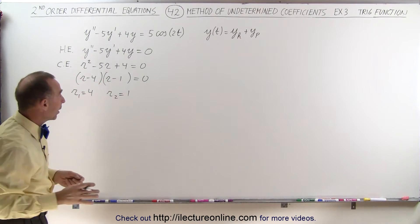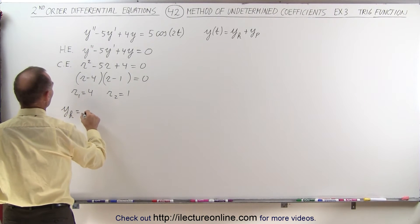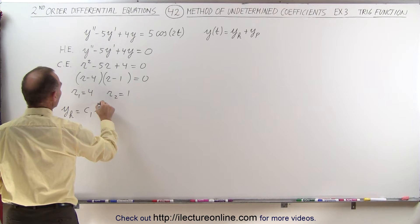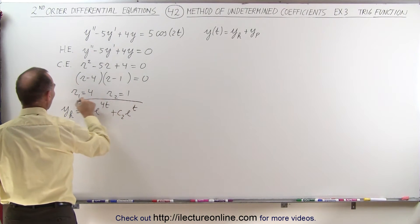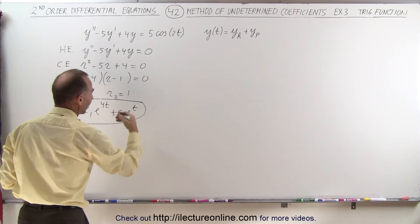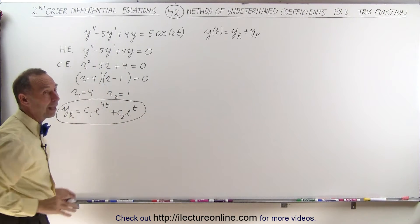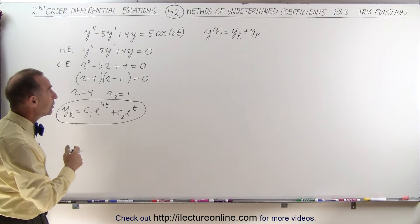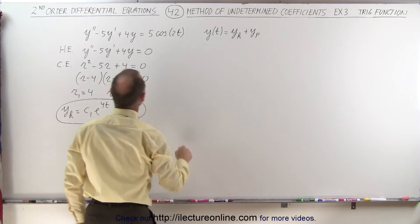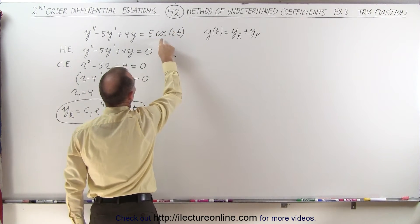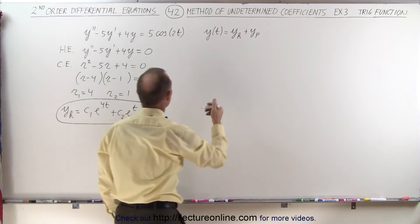This allows us to write the homogeneous part of the solution: y homogeneous equals c1·e^(4t) plus c2·e^t. Now we want to figure out how to solve the non-homogeneous part — the particular solution. We look at g(t) and notice it is a trigonometric function.